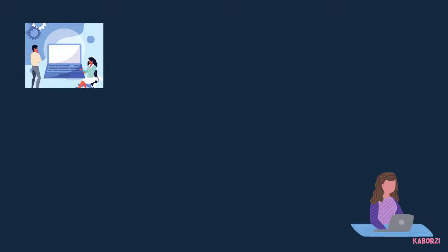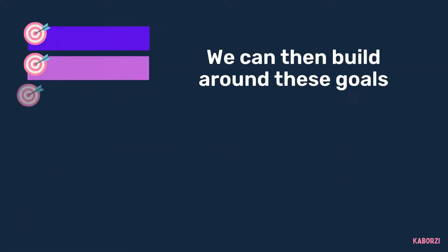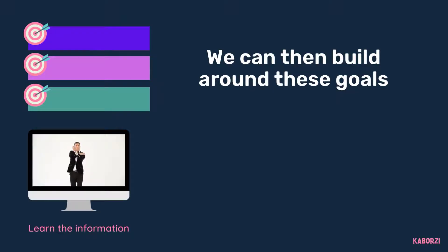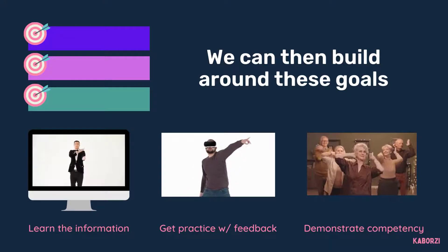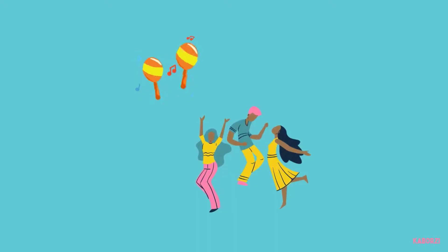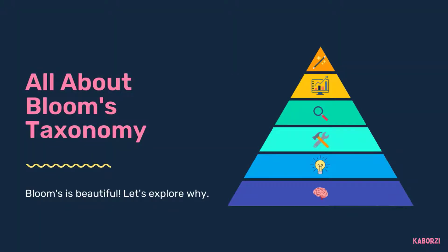This level setting helps course designers and learners alike. By clearly establishing learning objectives from the get-go, we're creating measurable goals for learners to reach, while also providing ourselves with a clear map forward to design learning content that gets them there. We can then build the curriculum around these goals, creating the conditions for learners to receive the information required, get practice with feedback taking the actions we want them to take, and demonstrate their competency in reaching these goals. Macarena dance-off, anyone? In essence, Bloom's is beautiful. Let's explore why.